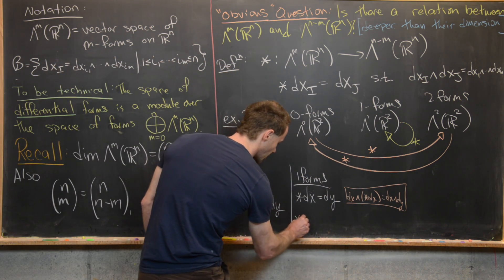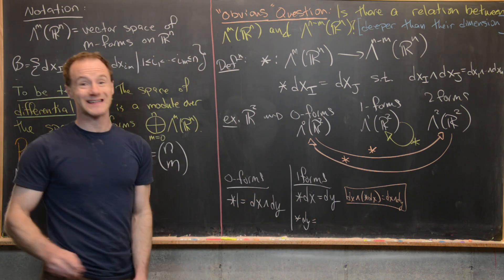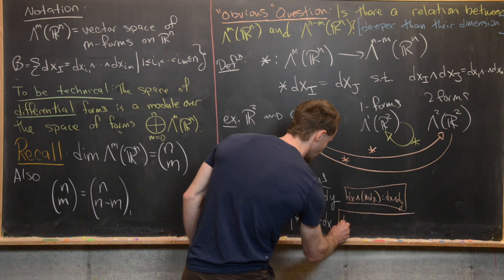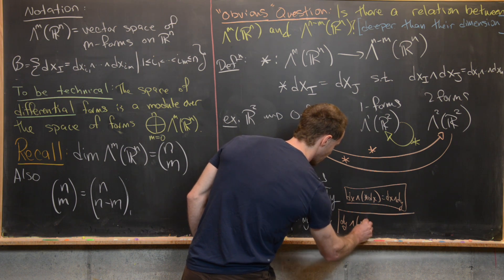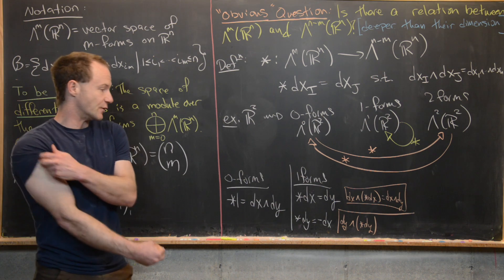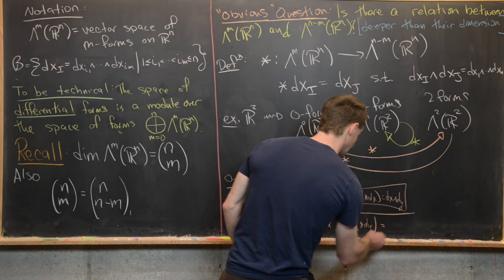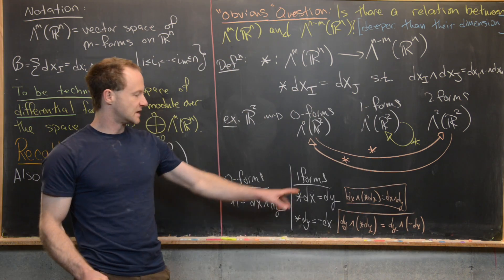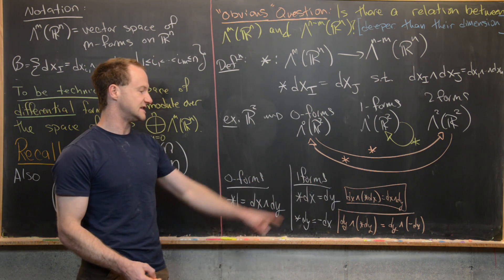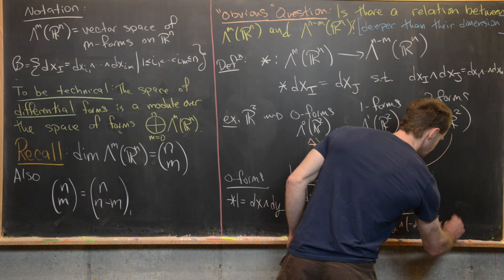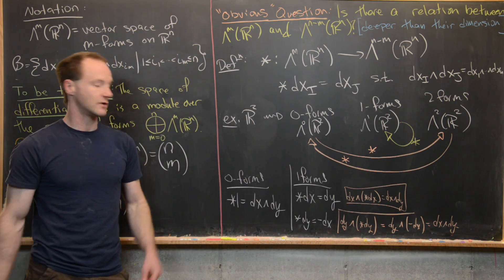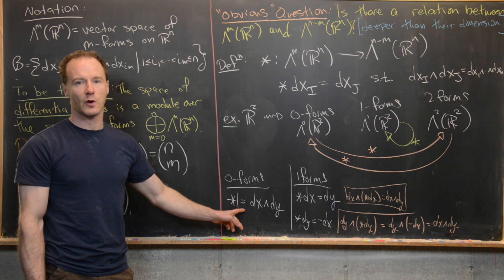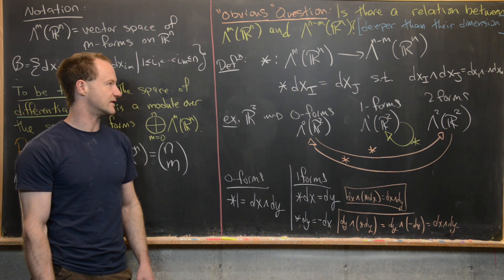Now let's look at star dy, which is going to be negative dx. That's because we want dy wedge star(dy) to equal dx wedge dy. In order for that to be true, because of anti-commutativity, we need to put minus dx there. When we commute dx and dy, that minus sign cancels and leaves us with dx wedge dy. For two forms, it's essentially the same thing, just with the star on the right-hand side instead of the left.